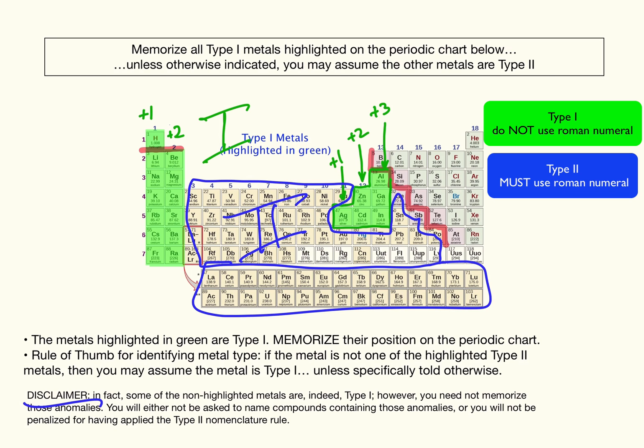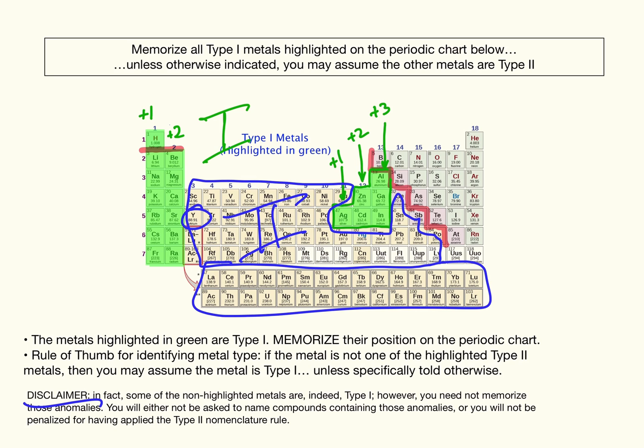Disclaimer. This isn't always true, for example, yttrium actually is a Type 1 metal. But, unless I tell you that, you can assume that it's Type 2. And also, if I gave that to you on a test, which I probably wouldn't, if you named it as a Type 2, I would give you credit because I told you to assume it's a Type 2. But if you named it as a Type 1, I would also give you credit because, in truth, it is a Type 1.